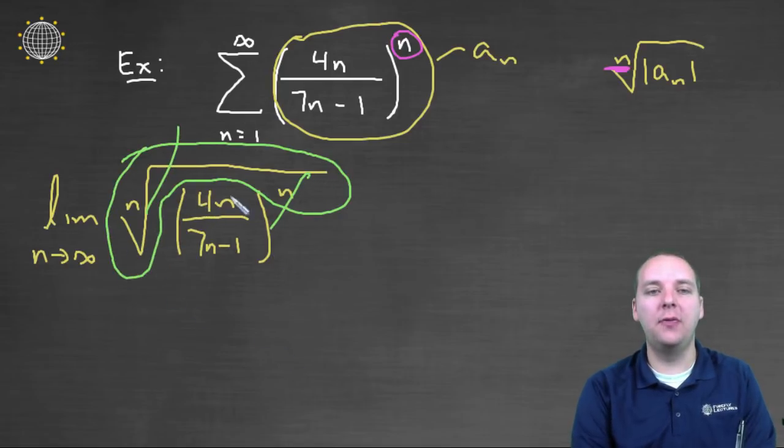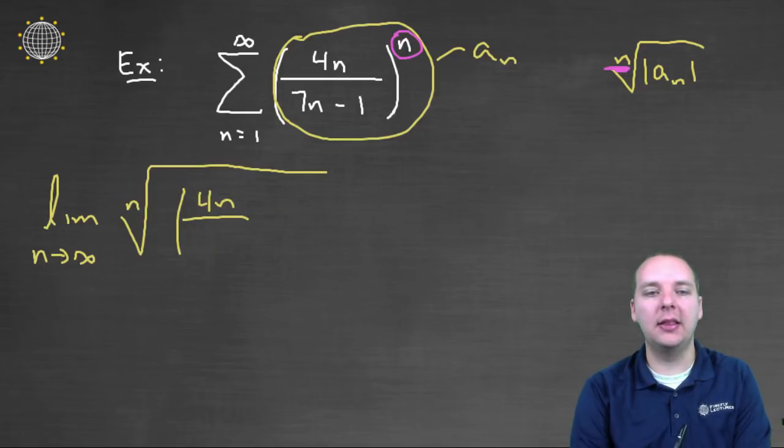So really we'll just have 4n divided by 7n minus 1, and in fact that's what I think I'll write instead, just so it looks a little better.